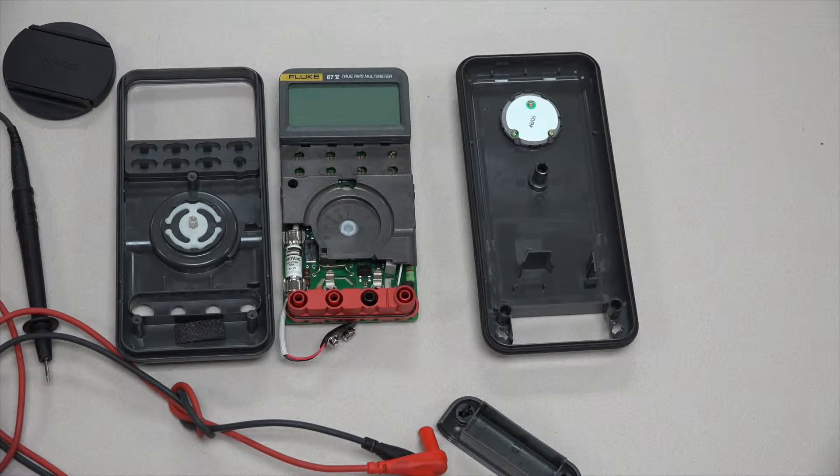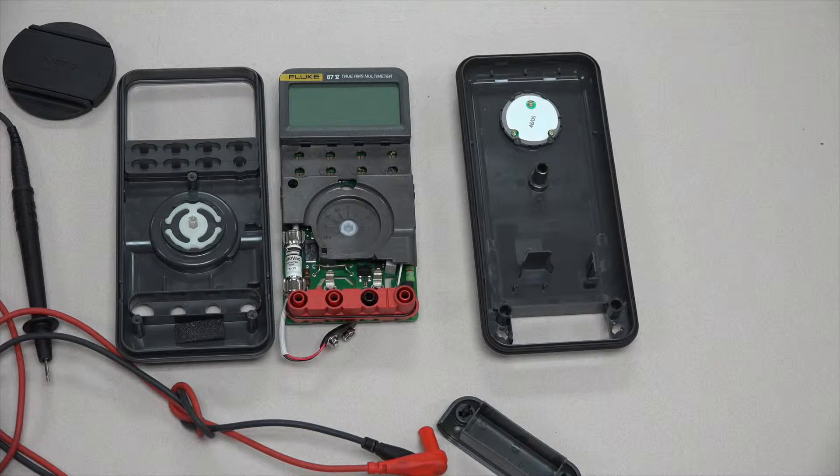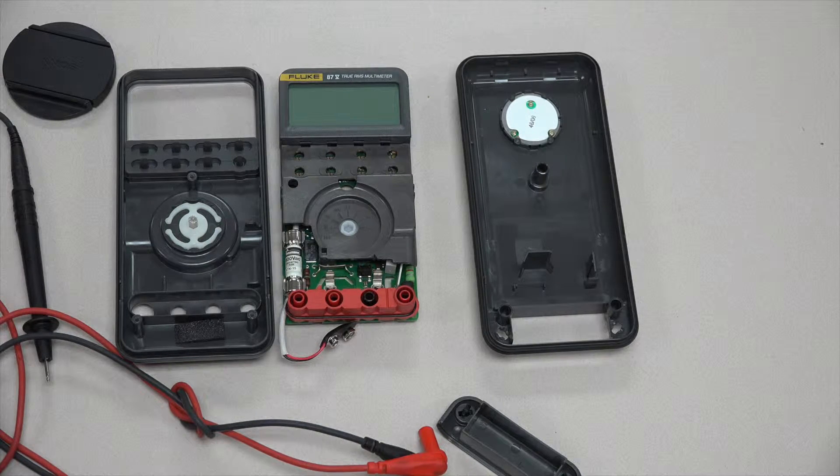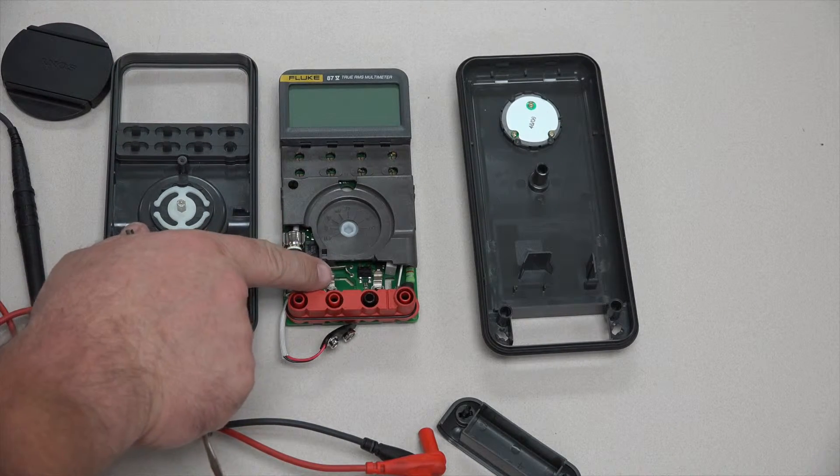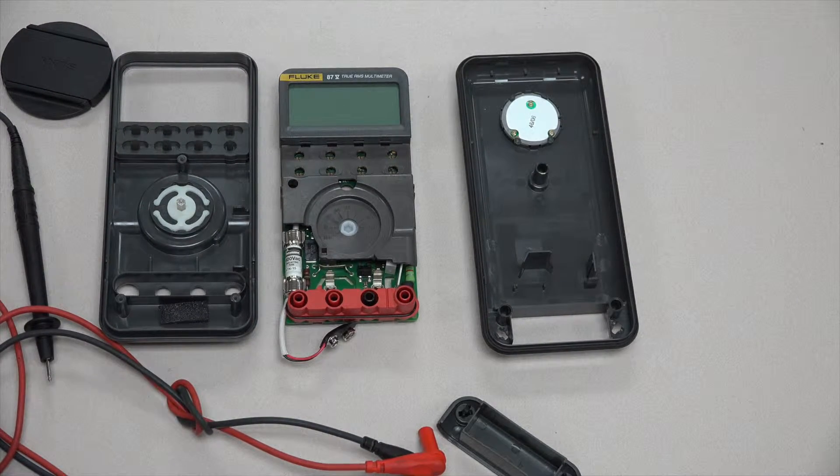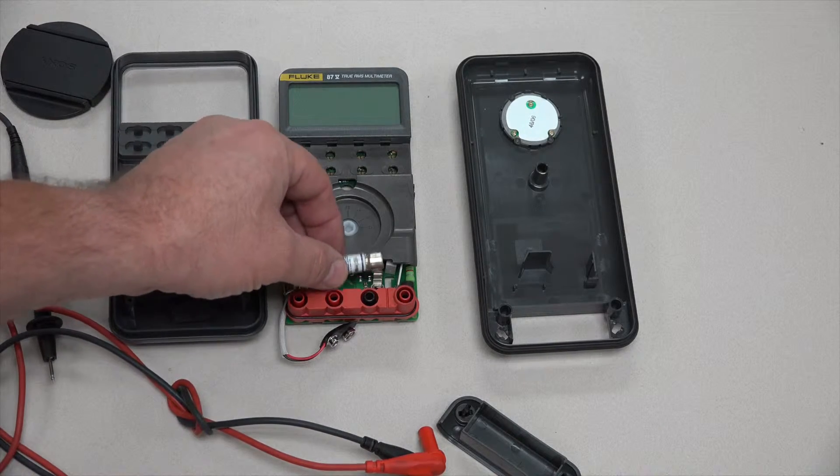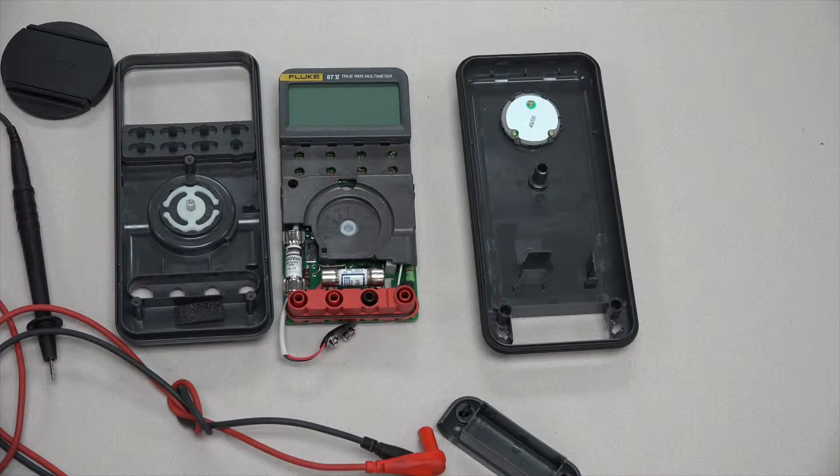Alright, there's the innards. And notice this particular one has the fuse missing. This is the fuse for the high amps. This would be the fuse for the low amps, and it's missing because it was blown, and there it is.